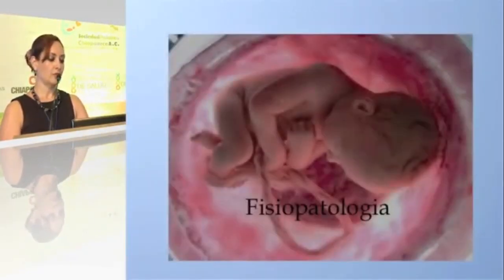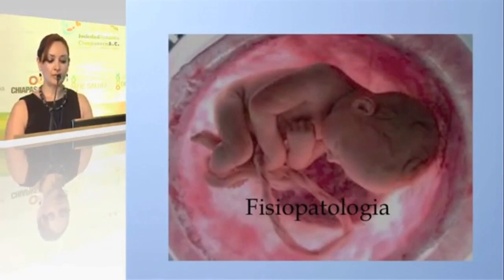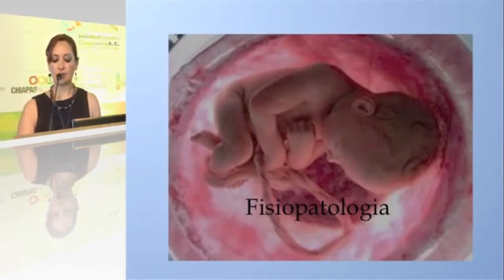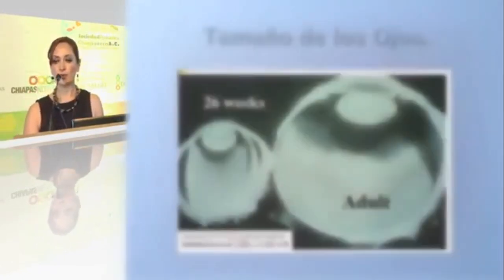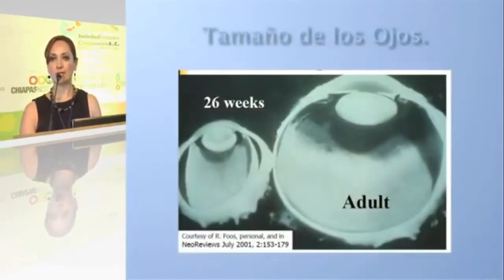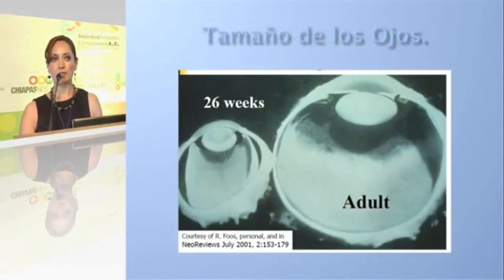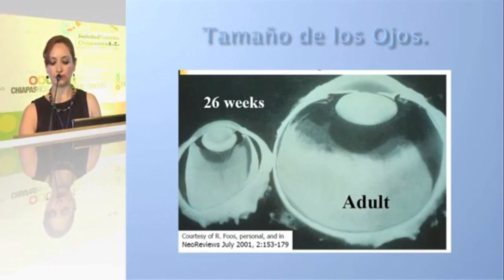Within the pathophysiology, it is described that the development of the retinopathy in humans begins around week 16, progressing from the center to the periphery at a rate of 1.1 mm per day.